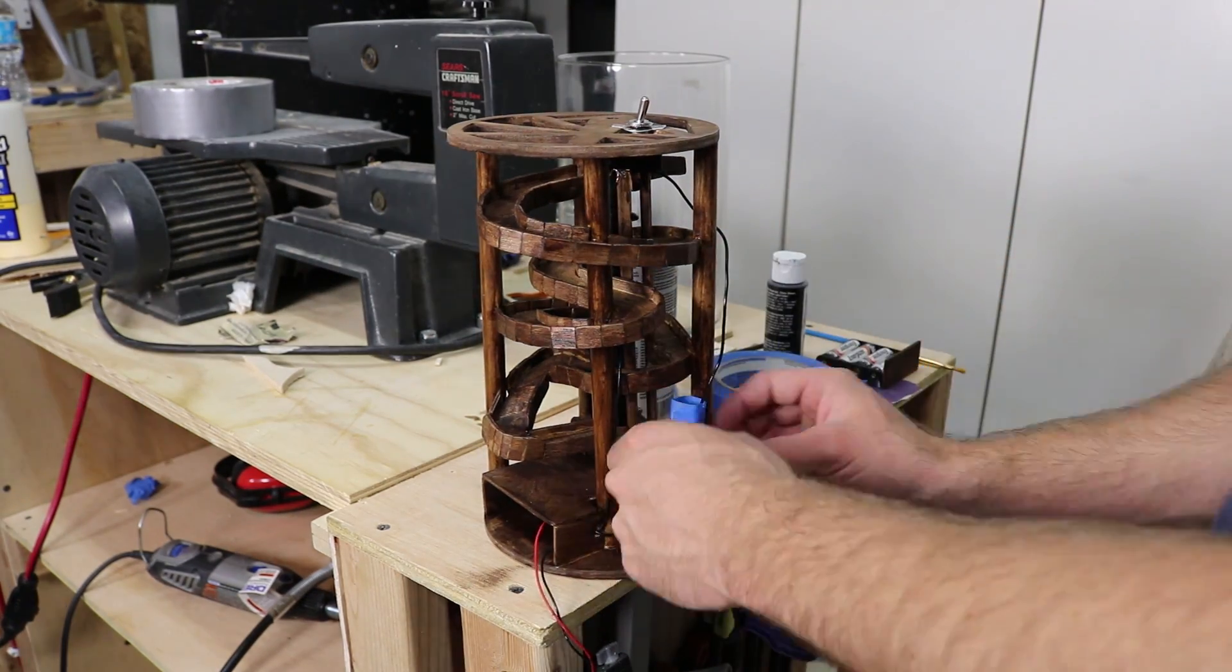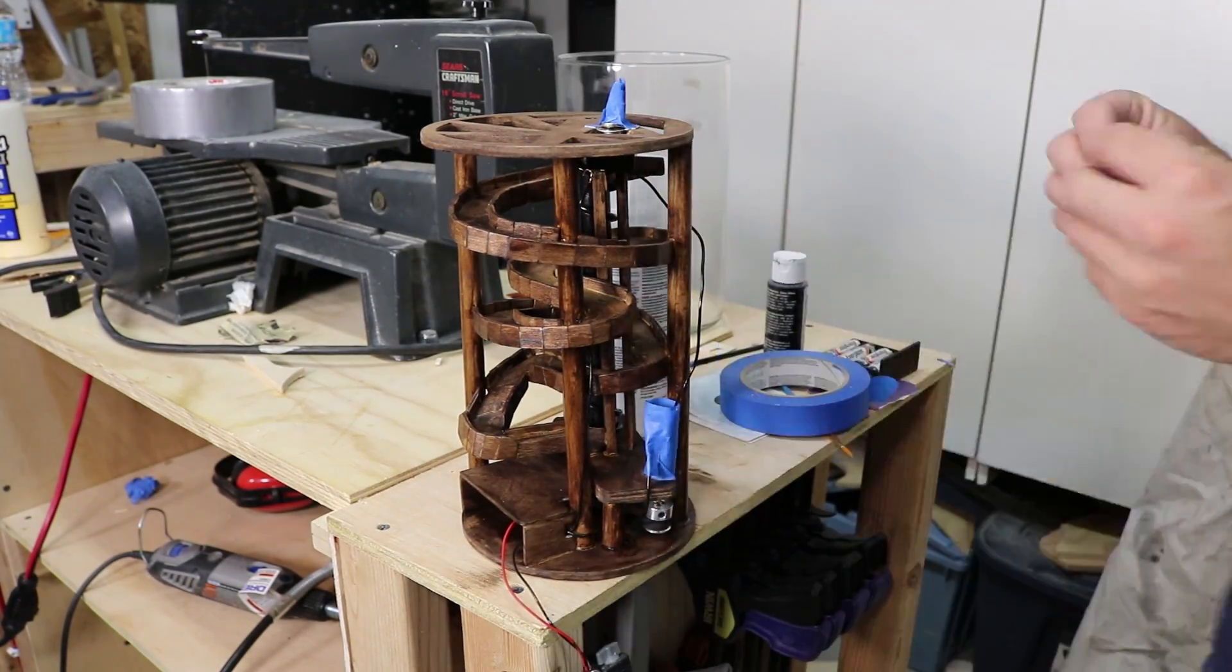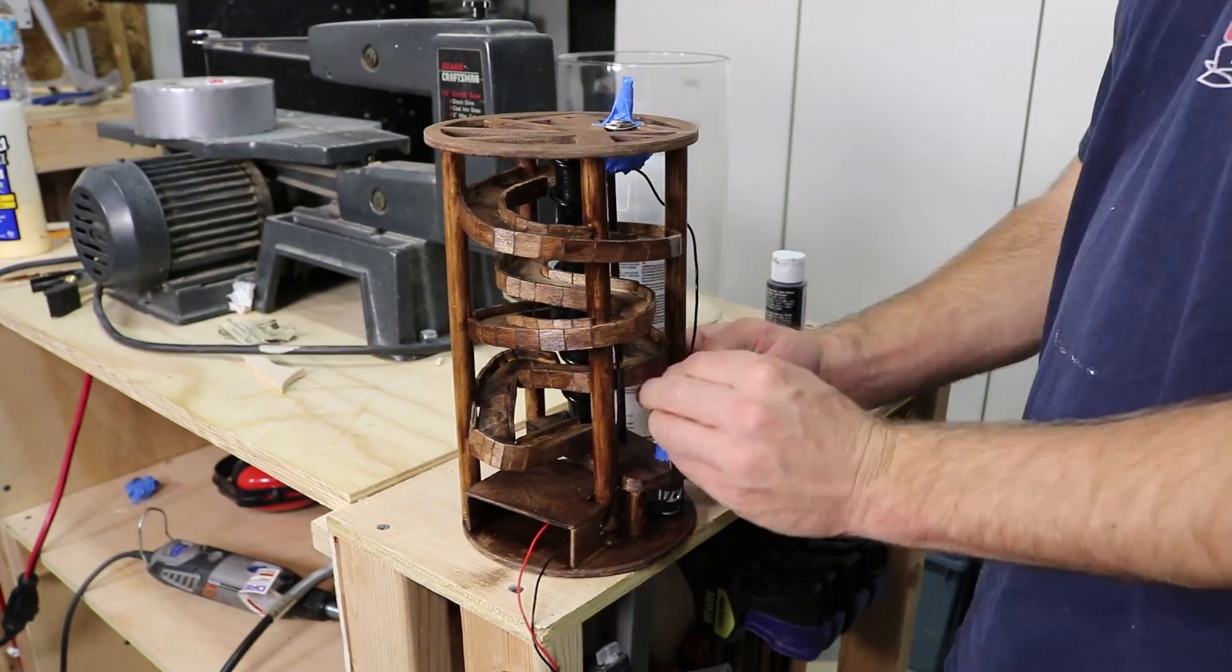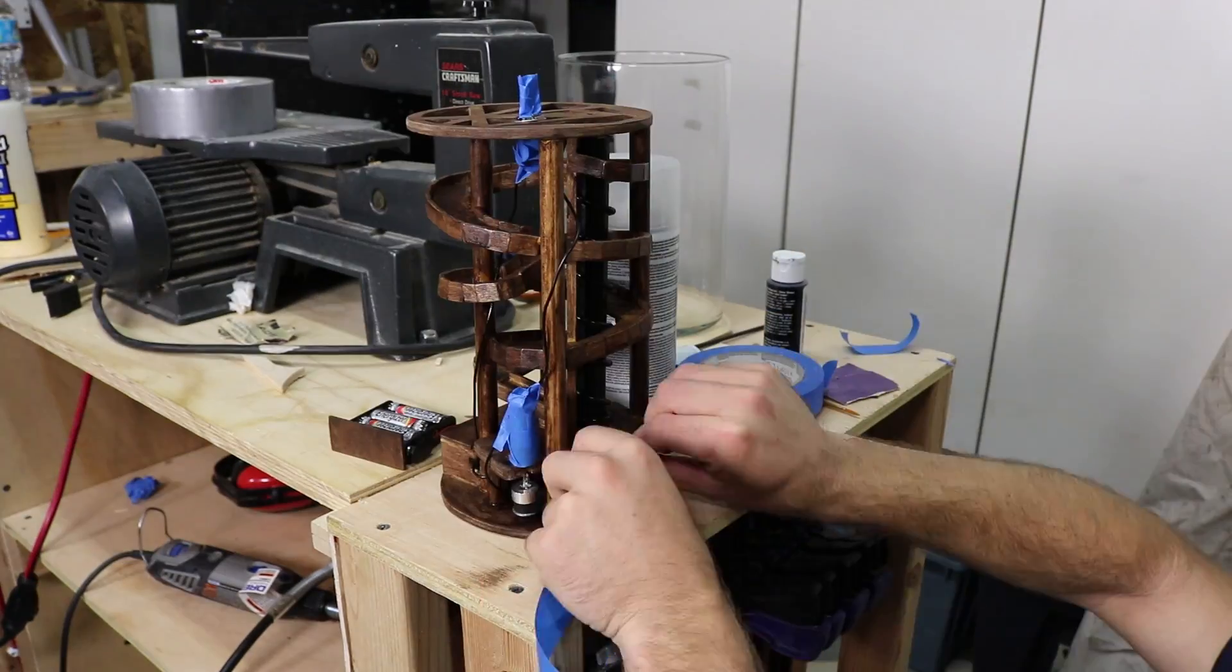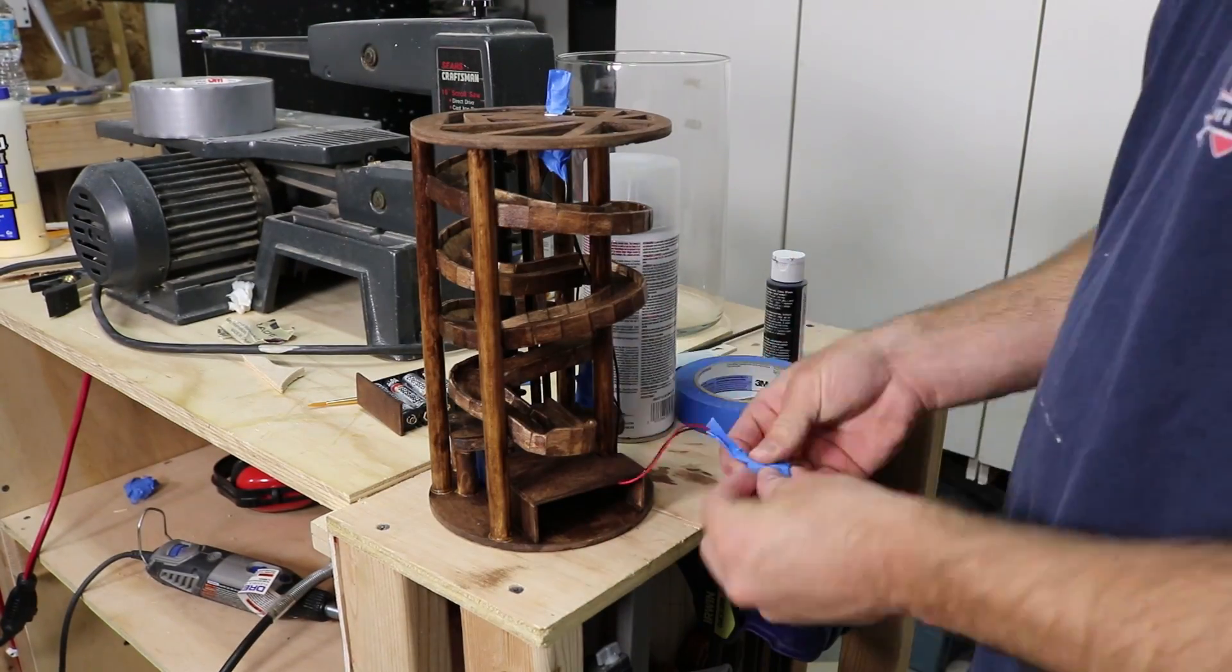The very last task was to seal the machine. I taped over all the exposed circuitry, such as the motor, switch, battery pack, and pulley gears. I didn't think the sealer would affect the performance of the moving parts, but now was not a time to take that kind of risk.